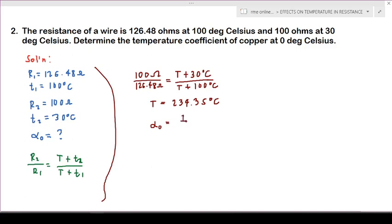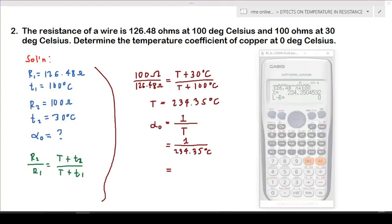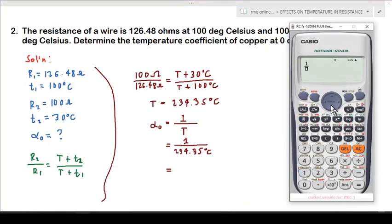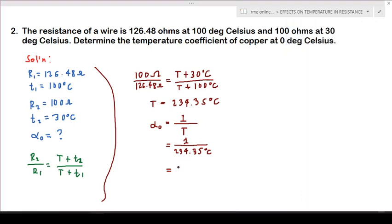So this is 1 over 234.35. So we have 1 over 234.35.